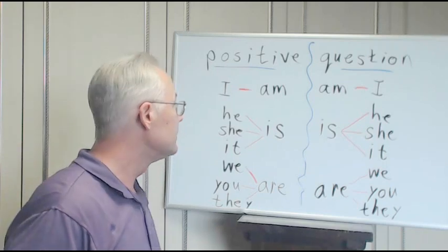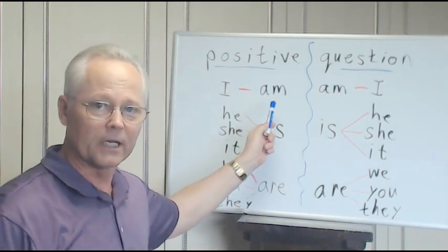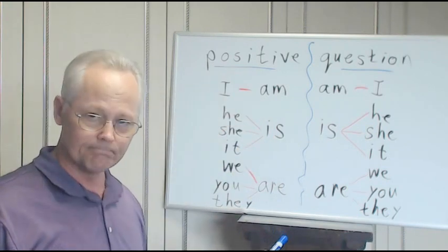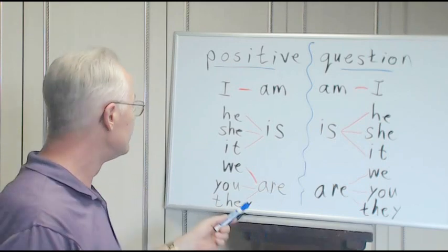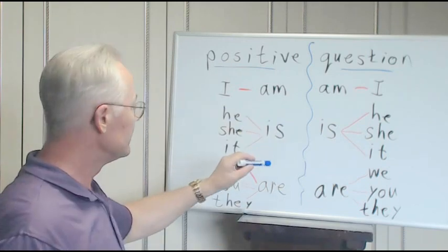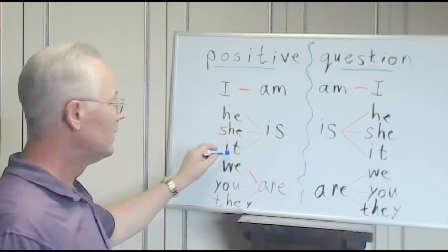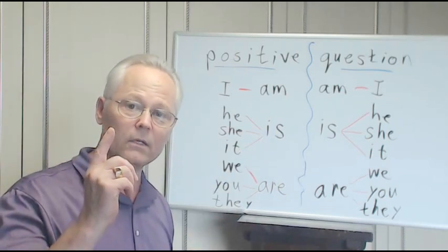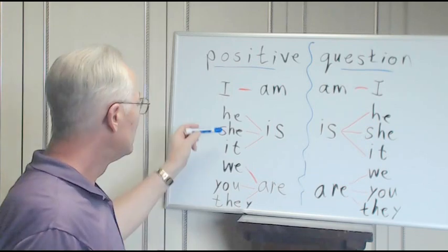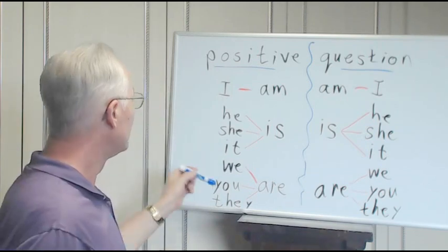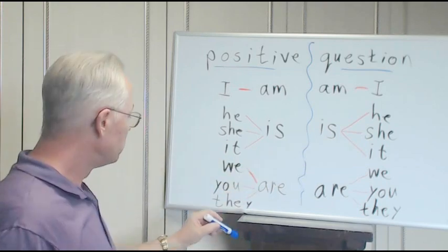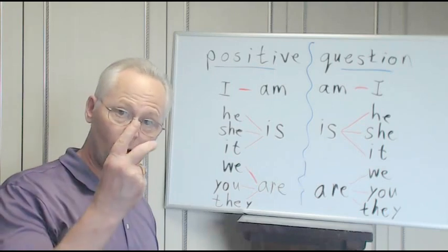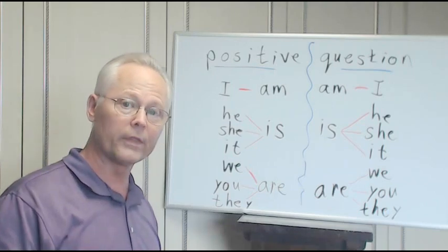Now what we want to look at is how to begin forming our sentences. I am. He is, she is, it is - is representing one, right? He, she, or it, one. We are, you are, they are - more than one.